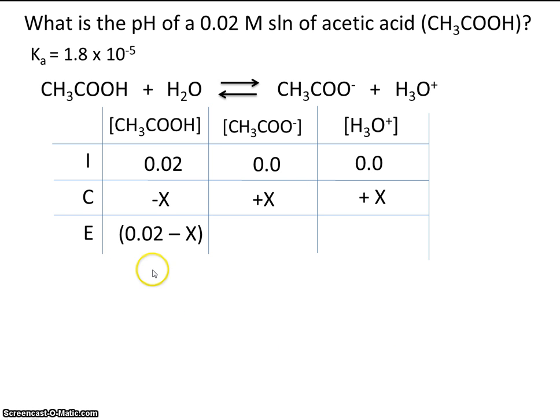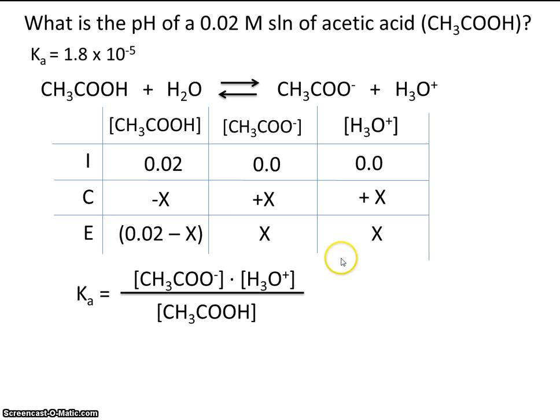So at equilibrium, we should have 0.02 minus however much it went down by. And then at equilibrium, we should have x and x. So let's go ahead and plug the equilibrium values into the equilibrium expression to get the equilibrium concentration. Okay, there's our Ka. Plug in x and x for the numerator. And the denominator is this.